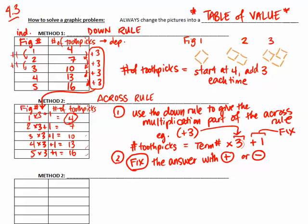So here is the across rule again. Number of toothpicks is equal to term number times 3. The 3 comes from the down rule. Then I need to fix, I need to add the plus 1 or subtract depending on the numbers to get the correct answer in the total number of toothpicks. So my rules are across rule number of toothpicks equals term number times 3 plus 1 or term value equals term number times 3 plus 1 depending on what our dependent variable is.